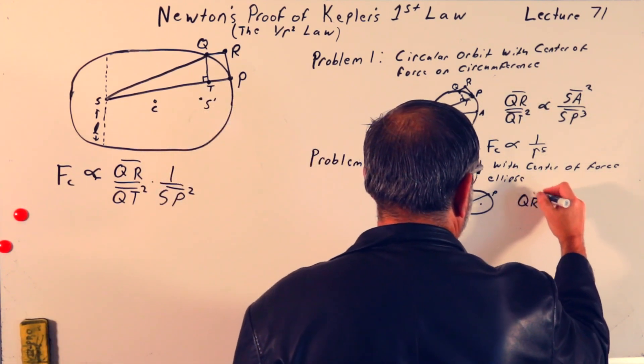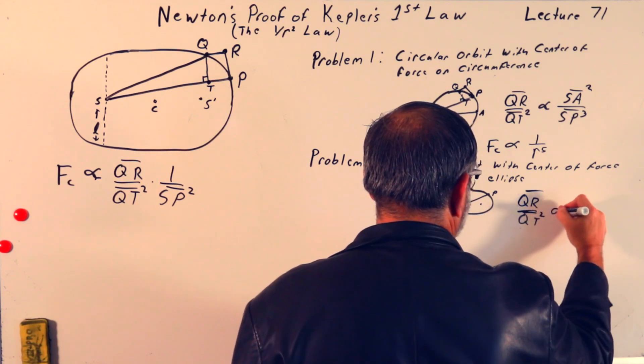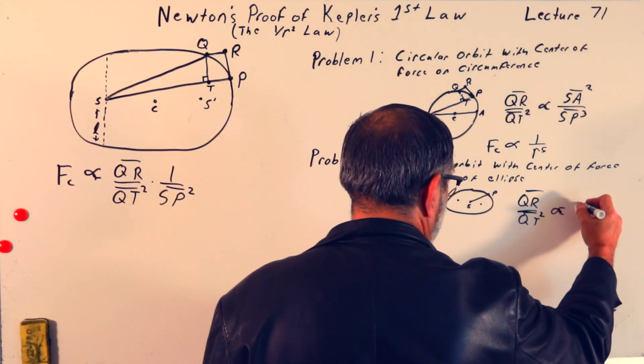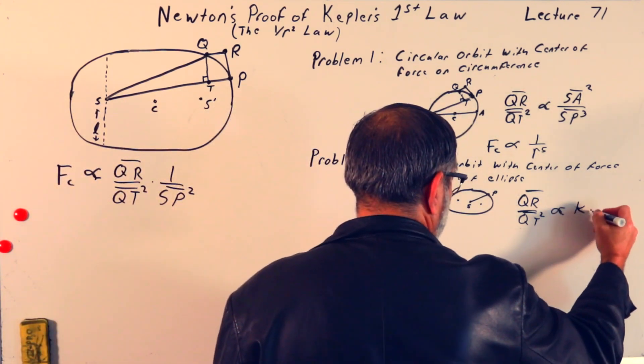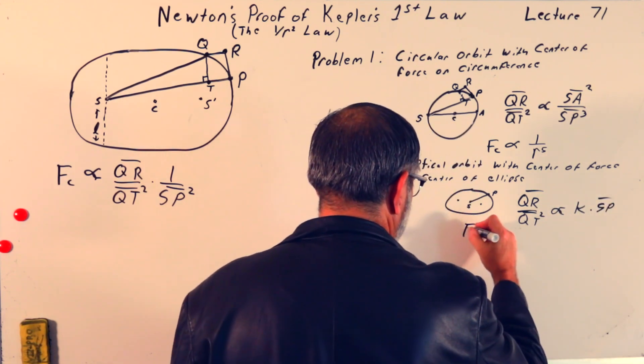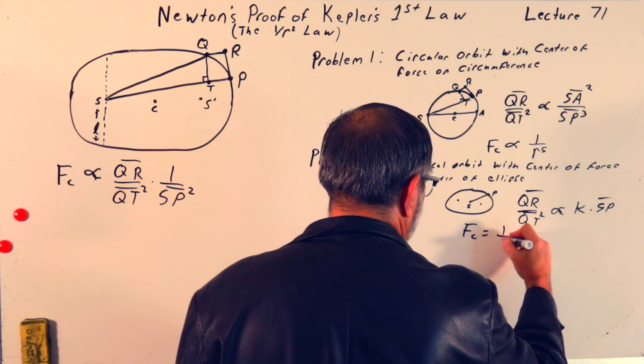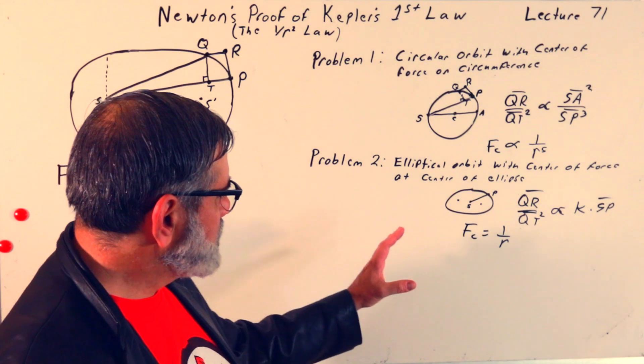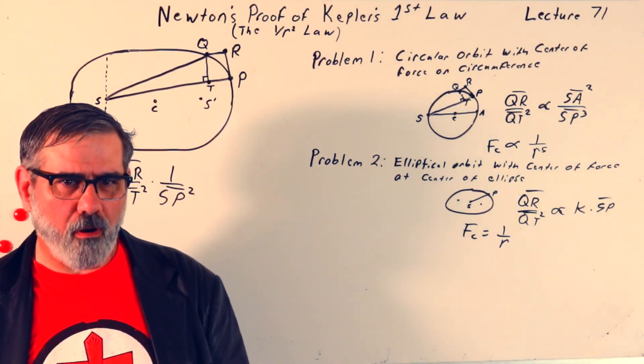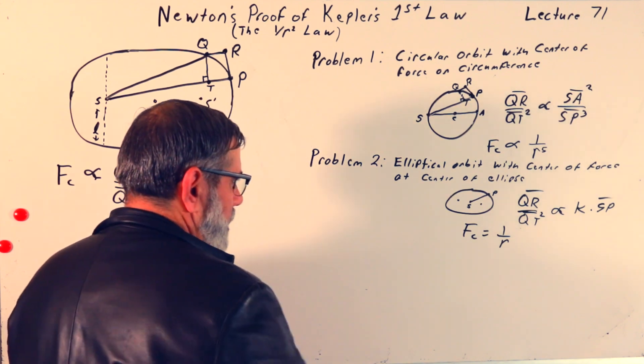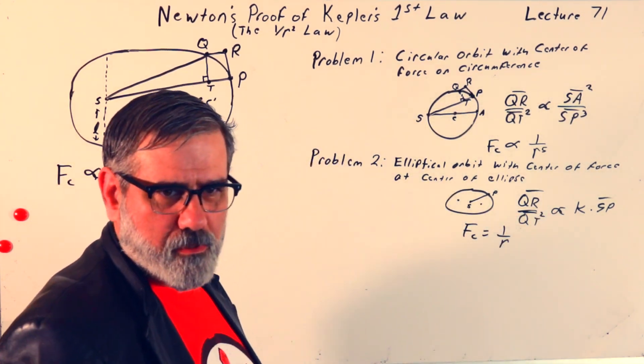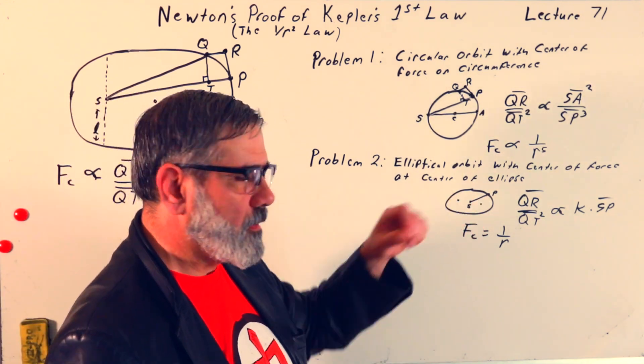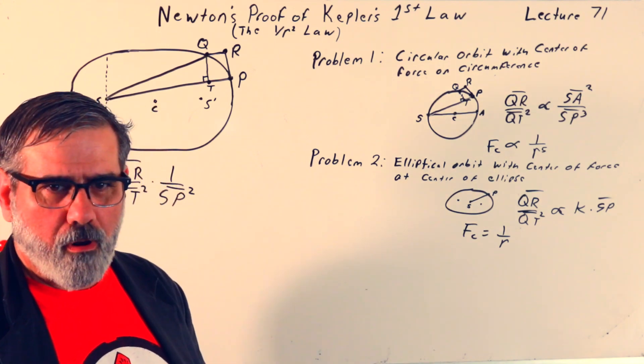And so, in this case, he found that QR over QT squared was proportional to, well, let's just say a bunch of stuff, which I'll write in as k, times SP, such that the centripetal force, in this case, would end up being 1 over r. So, that would be a 1 over r relationship. You can think of this kind of similar to just centripetal acceleration, v squared over r. But there are a lot of extra parameters that went in, and I'm not going to draw them all, because it would take a lot of space, and it's not worth it. But anyways, problem 2 for this case would be force centers at the center of the ellipse, you would find the force law is 1 over r.